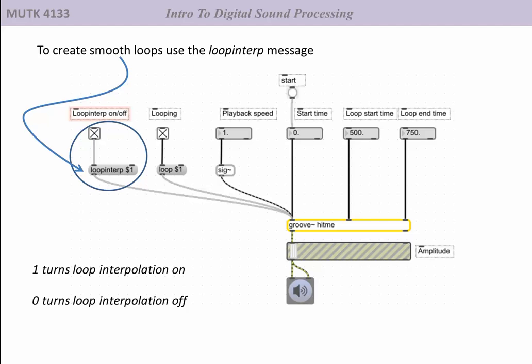You're likely to get clicks and unwanted bumps in the sound. Loopinterp takes care of that by smoothing out the transitions. And we turn that on and off just like we did loop. A 1 turns it on and a 0 turns it off.